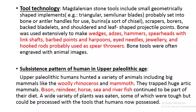Magdalenian tools included scrapers, borers, backed bladelets, and shouldered and leaf-shaped projectile points. Bone was used extensively to make wedges, hammers, spearheads with linked shafts, barbed points, and harpoons, as well as eyed needles, jewelry, and hook rods probably used as spear throwers. Bone tools were often engraved with animal images using burins.